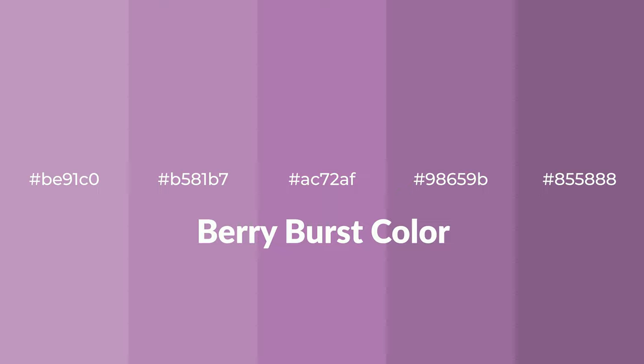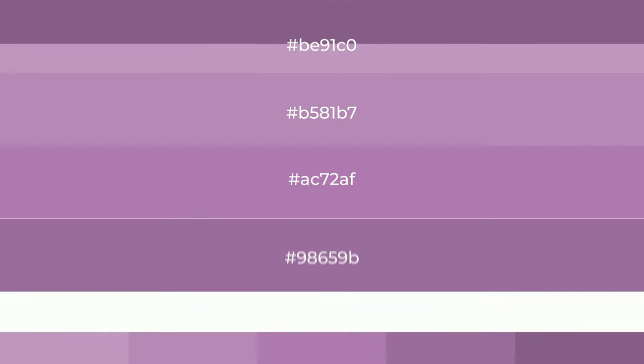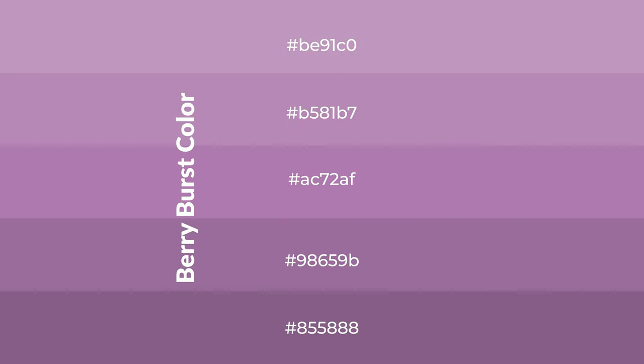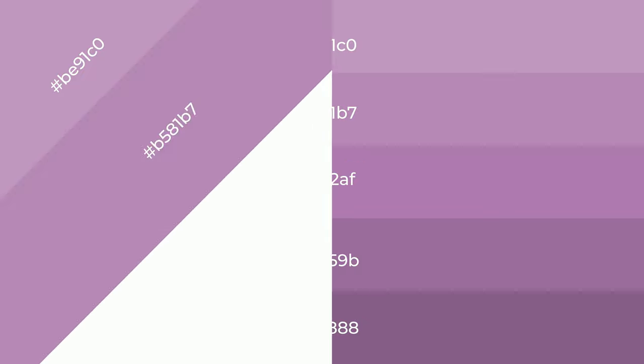Warm shades of berry burst color with violet hue for your next project. To generate tints of a color, we add white to the color. Tints create light and exquisite emotions. To generate shades of a color, we add black to the color, and it is used in patterns, 3D effects, and layers. Shades create depth and drama.